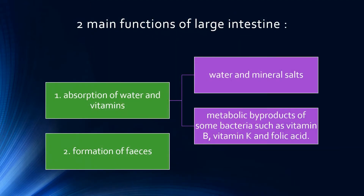There are two main functions of the large intestine. The first function is absorption of water and vitamins. Water here includes water and mineral salts. As for vitamins, this includes metabolic by-products of some bacteria, such as vitamin B, vitamin K, and also folic acid.